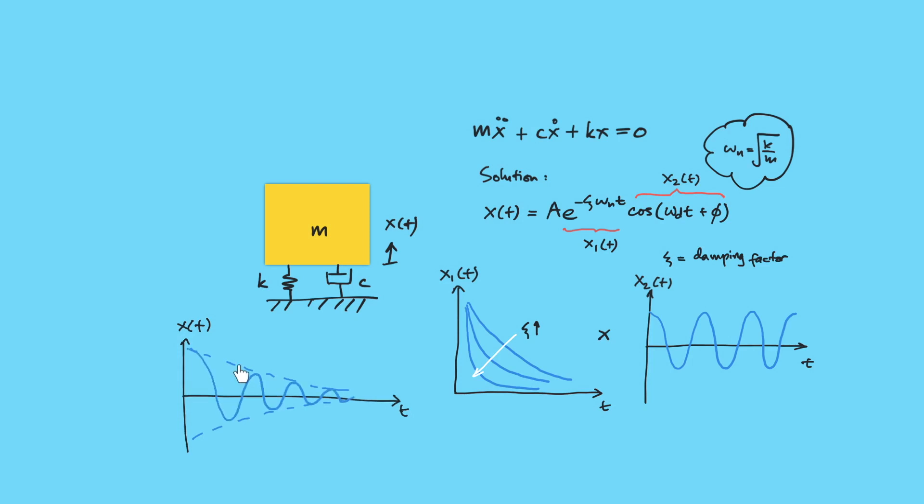The slope of the decay will be determined by the value of zeta or the damping loss factor. So if we have a greater amount of damping, then we have the response to decay faster by time.